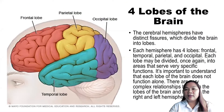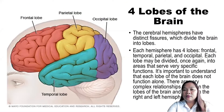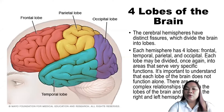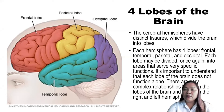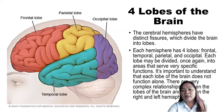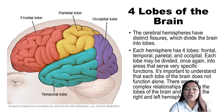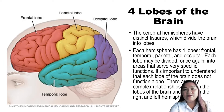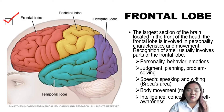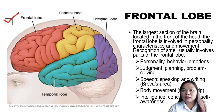Our cerebrum is divided into four lobes: the frontal, the temporal, the parietal, and the occipital. Each lobe may be divided once again into areas that serve very specific functions. It is important to understand that each lobe of the brain does not function alone — there are very complex relationships between the lobes and between the right and left hemisphere.